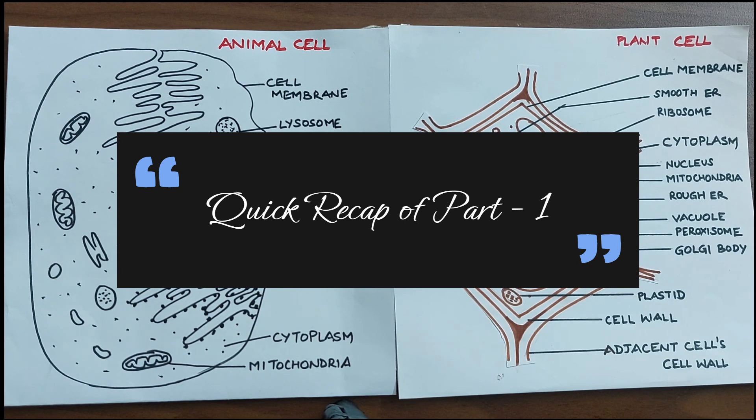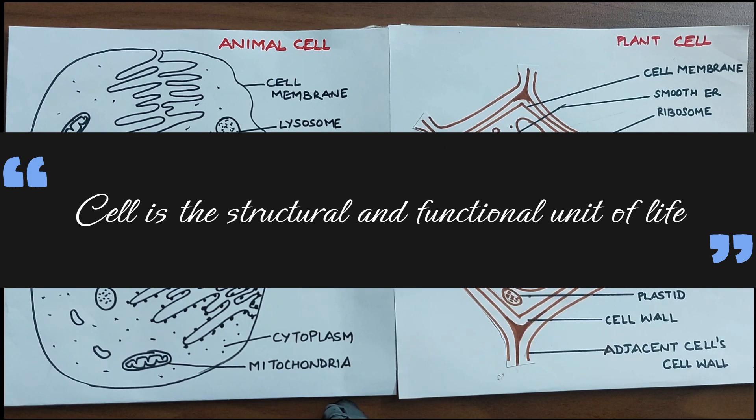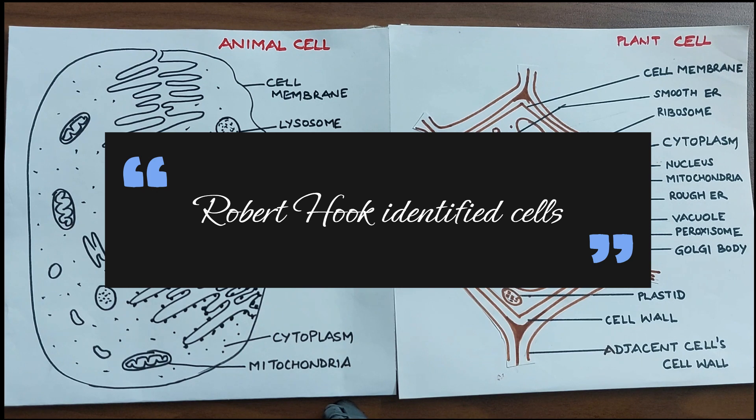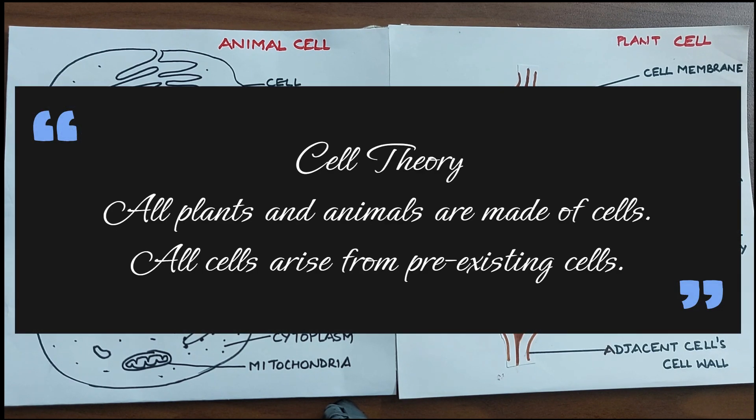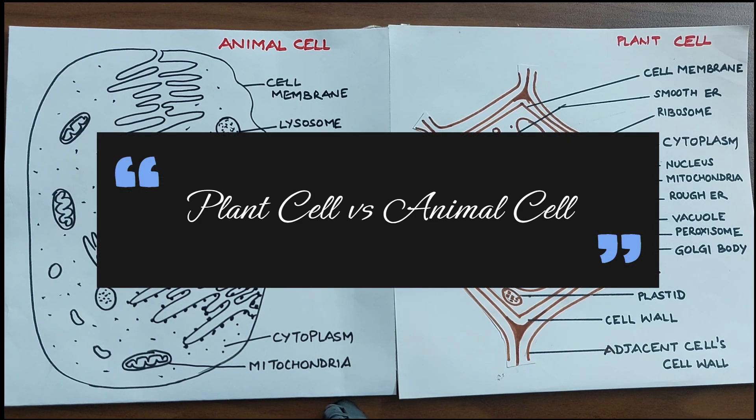So we saw the introduction to the cell, that the cell is the unit of life, it is the structural and functional unit of life. We also went through a little bit of history of how the cells were discovered and who discovered the different parts. We saw the cell theory where we also saw that all organisms are made up of cells and all cells arise from pre-existing cells.